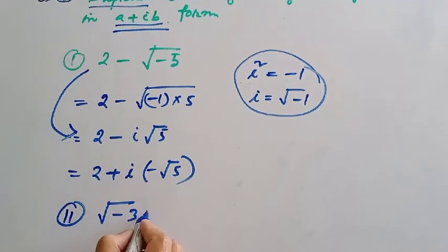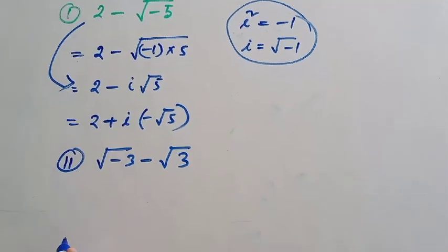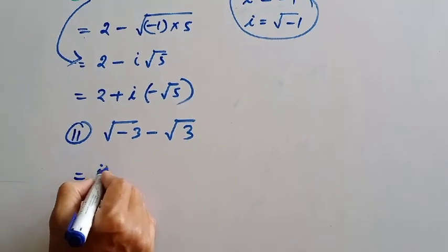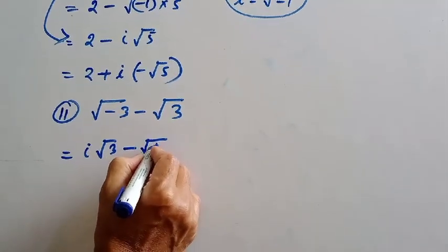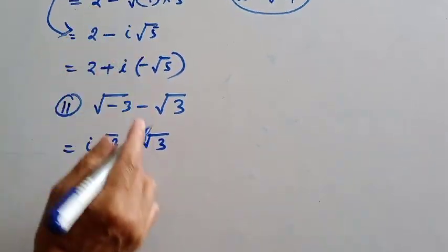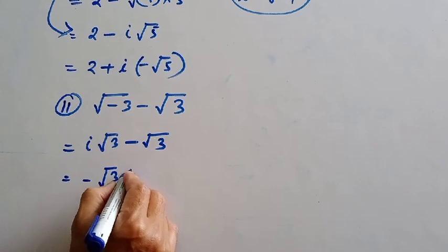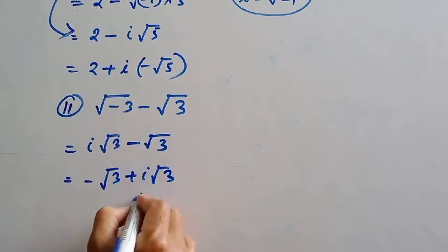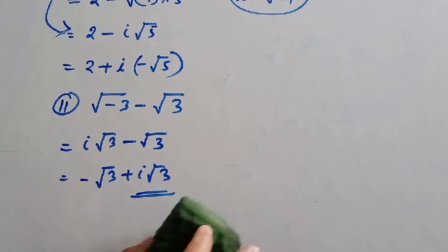Question number 2: root over minus 3. This equals i root over 3. So in a plus ib form, this is 0 plus i root 3, where a equals 0 and b equals root 3. Express in a plus ib form.